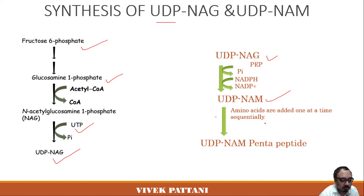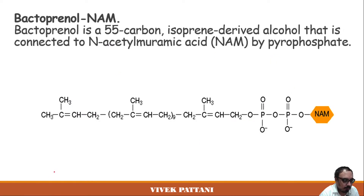After the conversion to UDP-NAM, amino acids are sequentially added one by one to the UDP-NAM, forming a pentapeptide. There is addition of five amino acids sequentially. Which amino acids are added may vary according to the type of bacteria, as different bacteria use different amino acids.